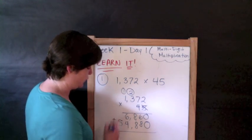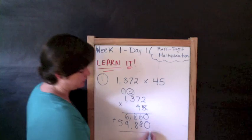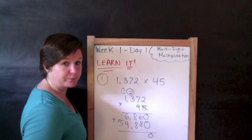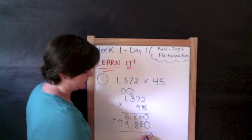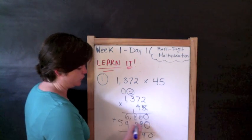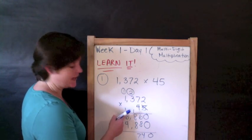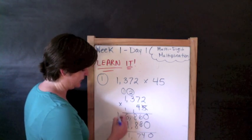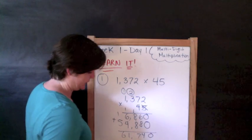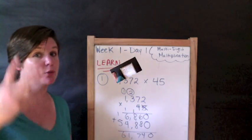So now I'm going to add these two products together to get my final total product. Zero plus zero is zero. Eight plus six is fourteen. Eight and eight is sixteen, plus one is seventeen. Four and six, that's an easy ten, plus one is eleven. And six. Sixty-one thousand seven hundred forty is your final product. Okay, let's do number eight. Example two.